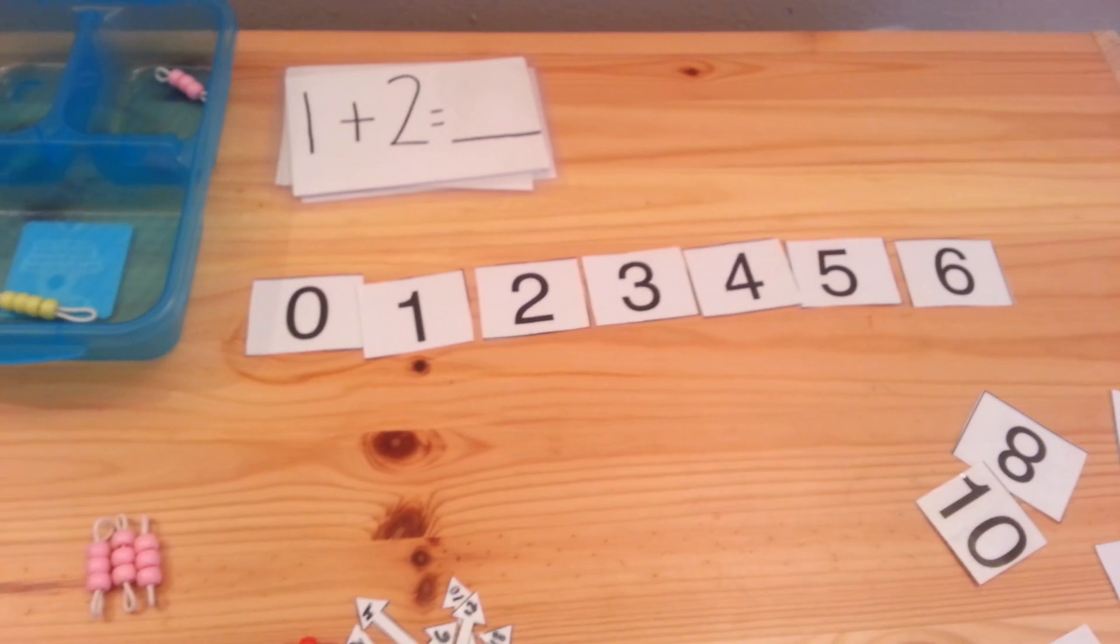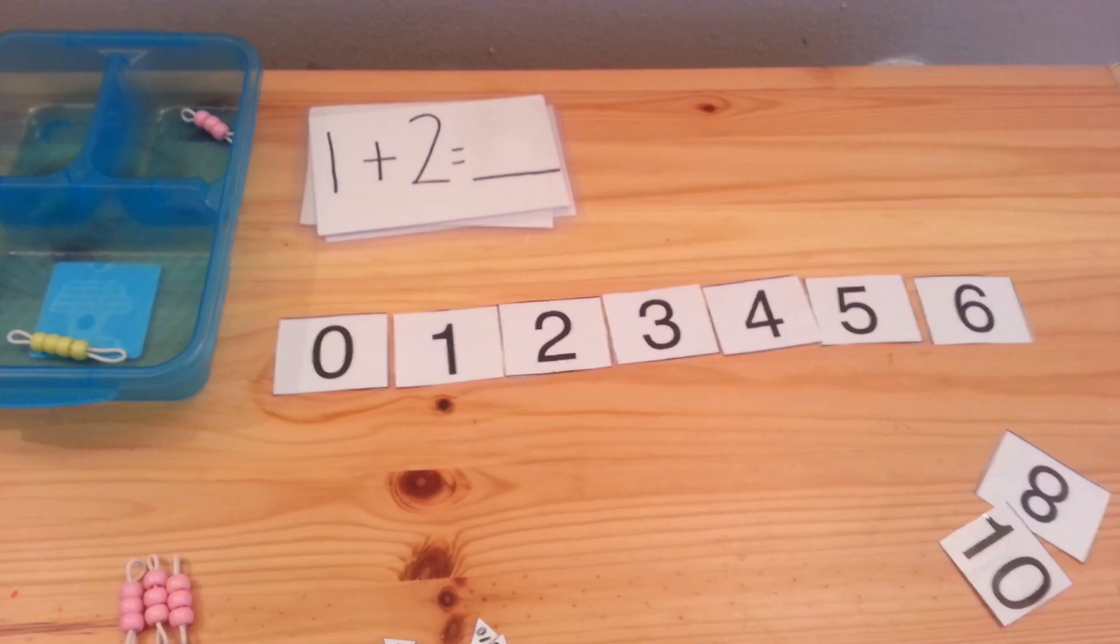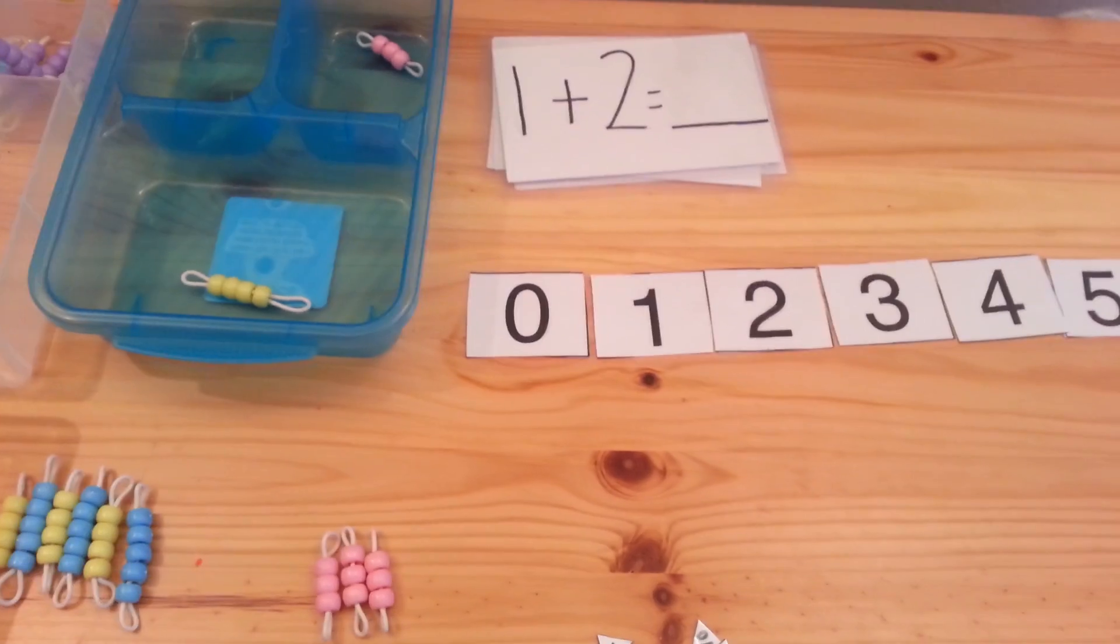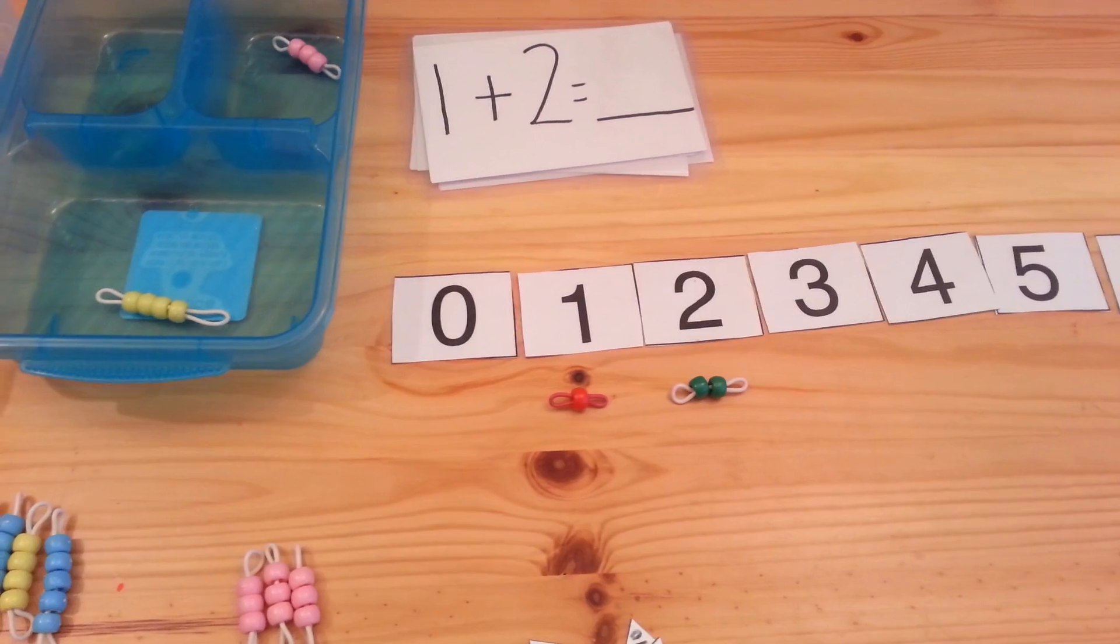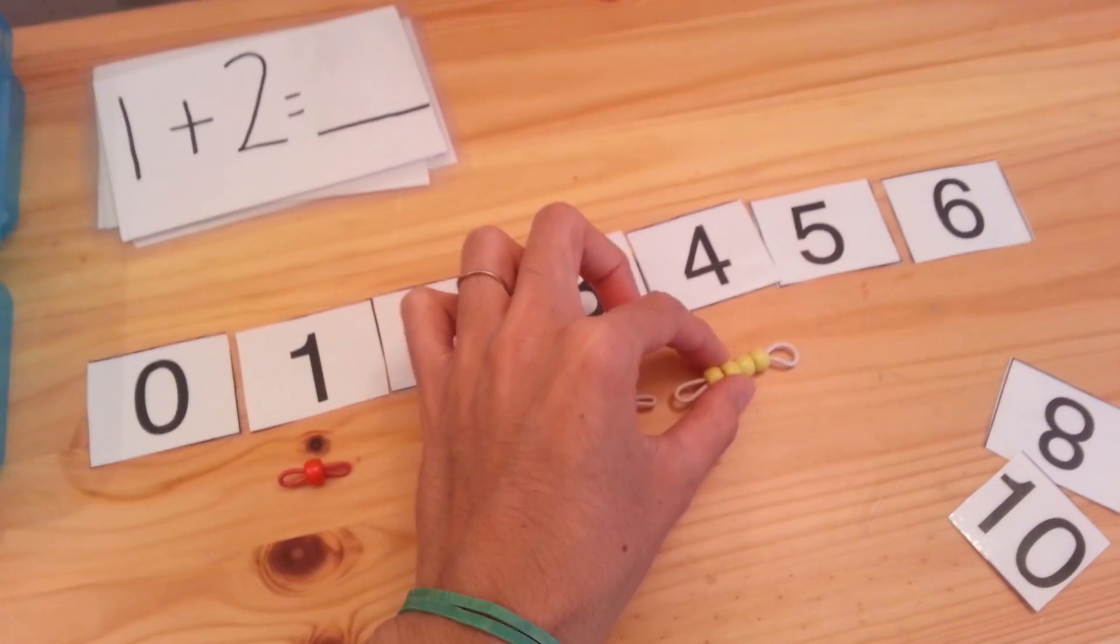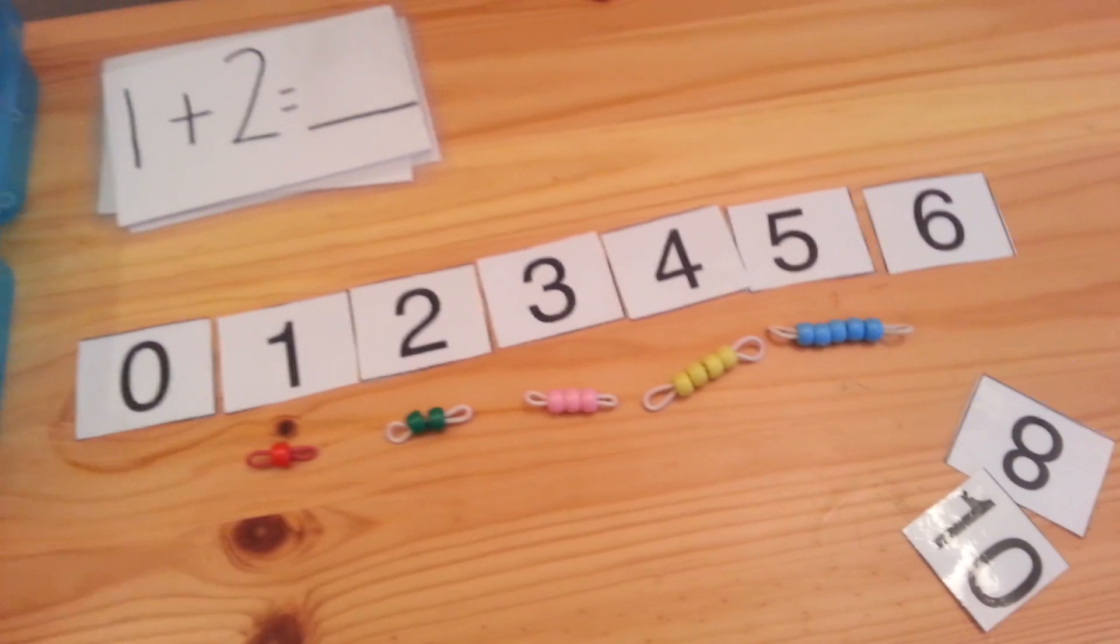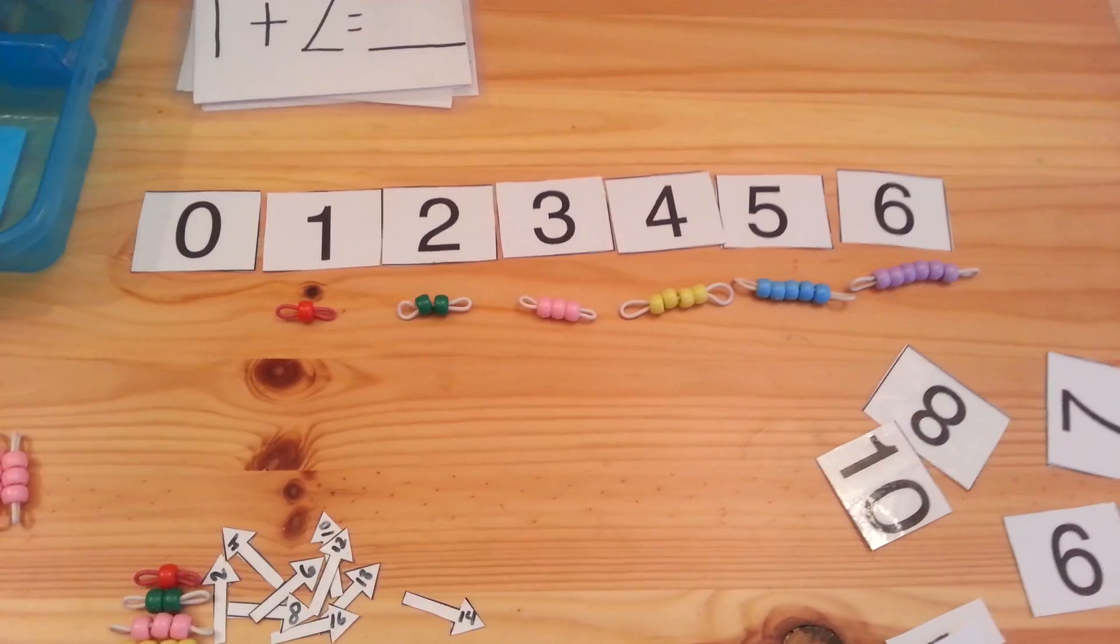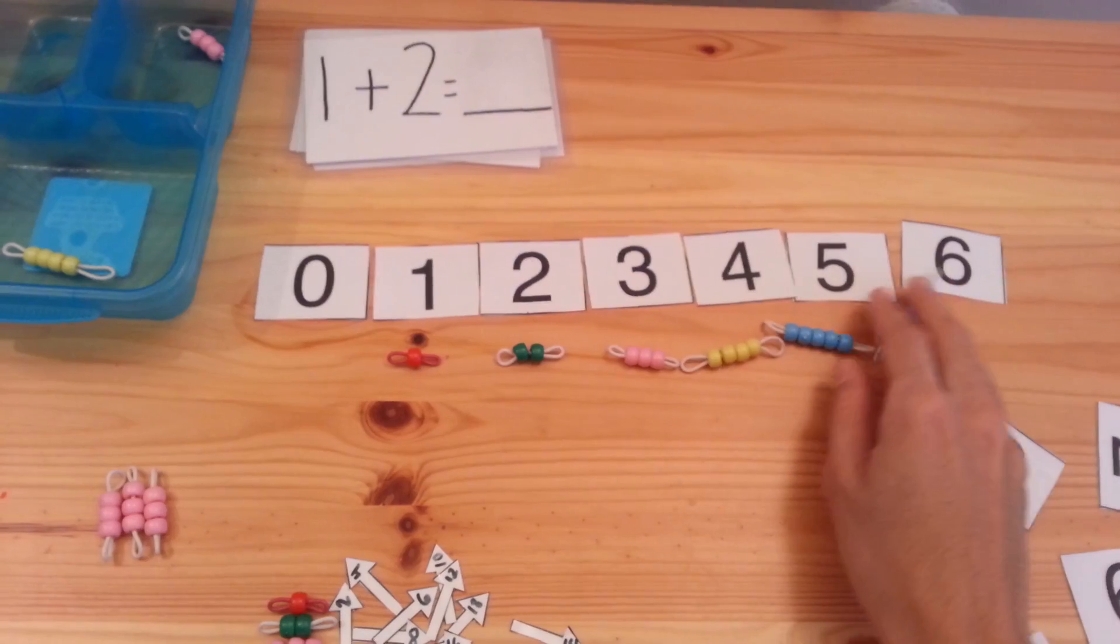And then you want the child to put the beads right next to the quantities. This is good so that the child starts associating that the number is associated to an actual quantity. Zero, that's none. Then one, two, three, four, five, six, and so on. It can go all the way up to ten. And this is good for two reasons: number order and also number quantity.